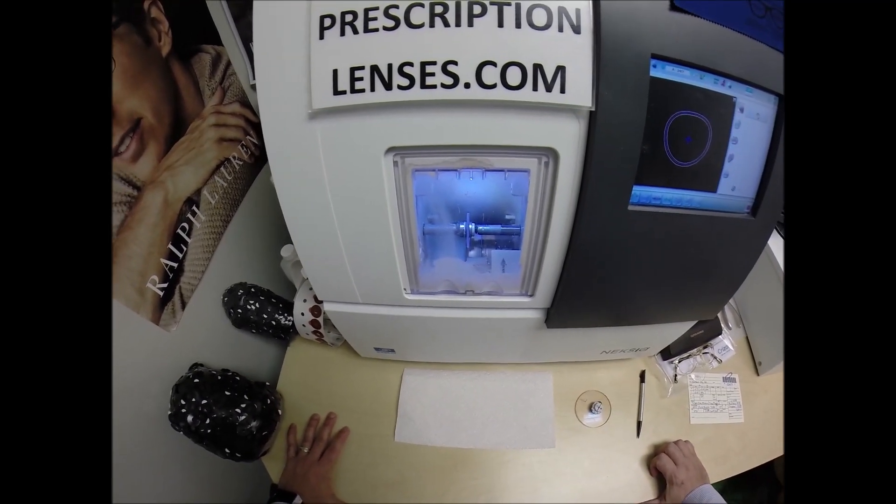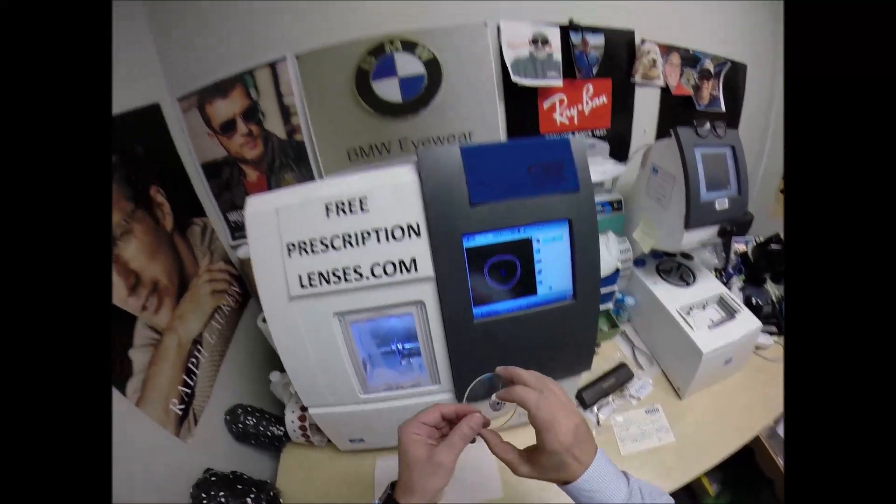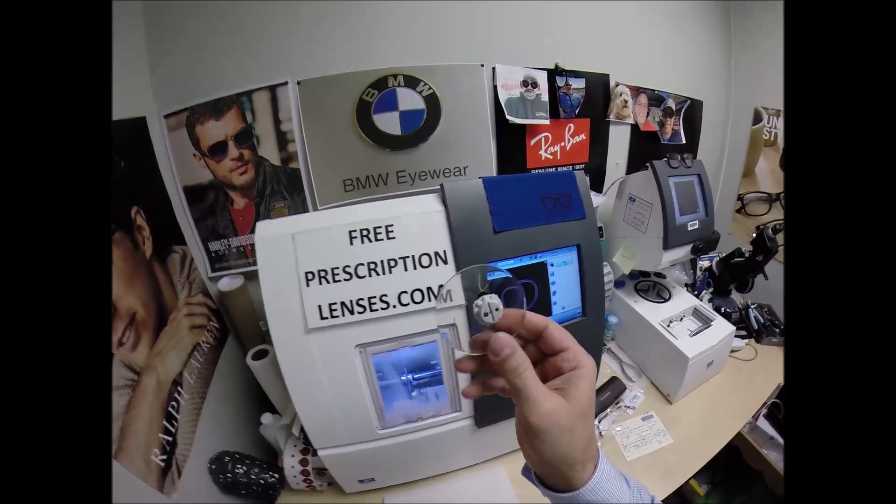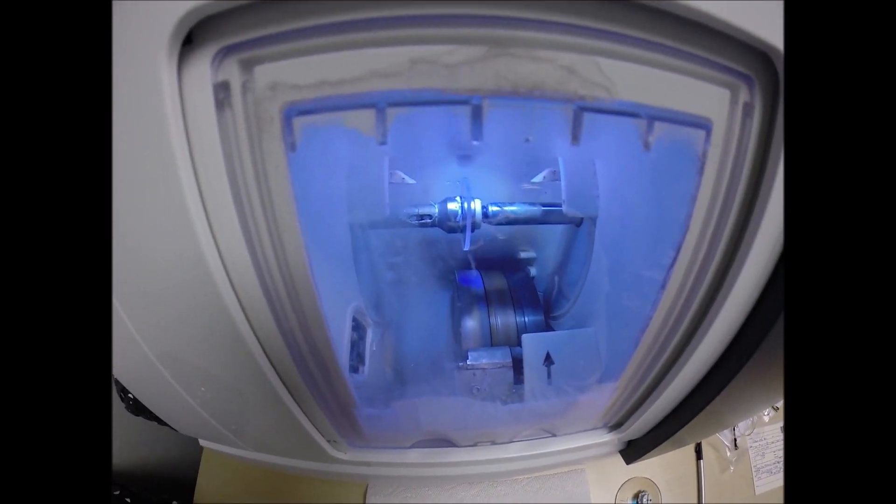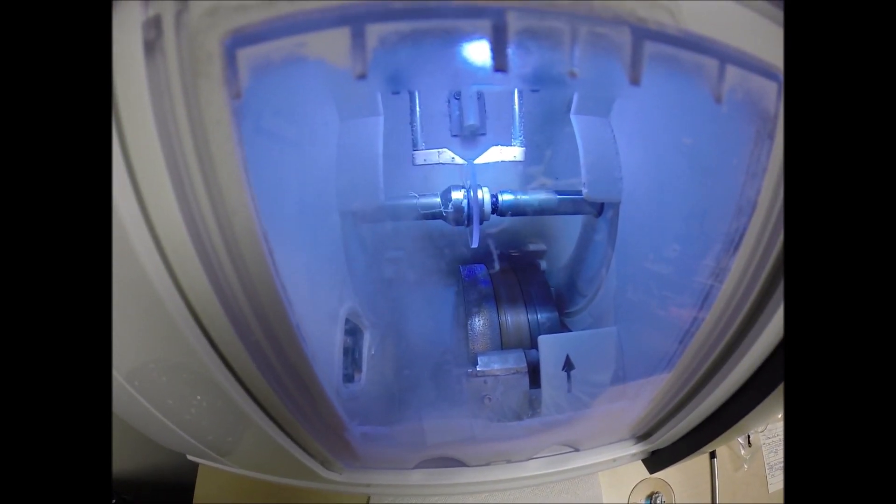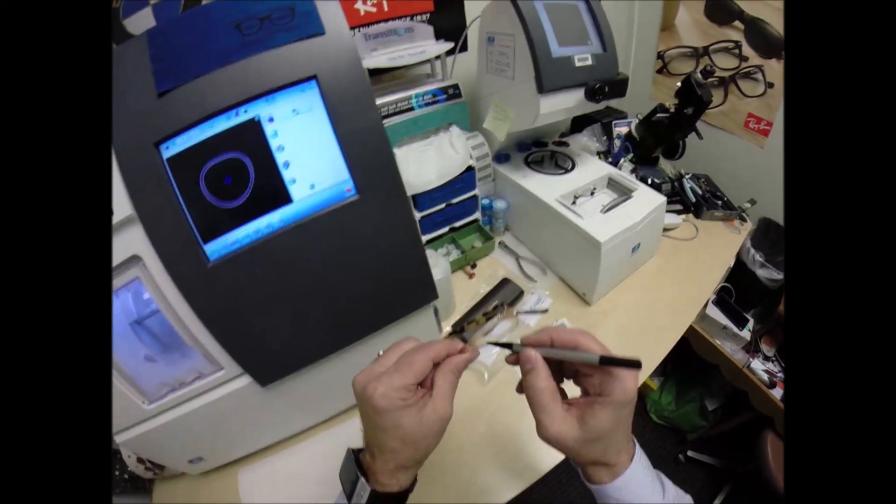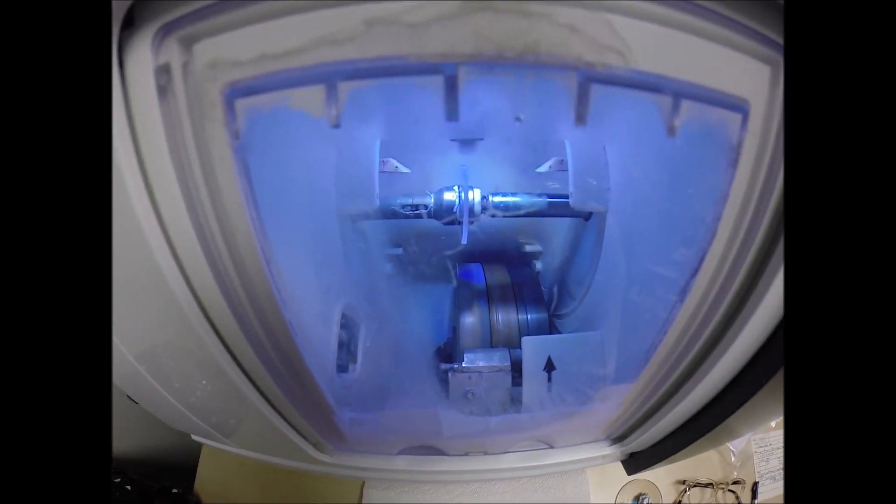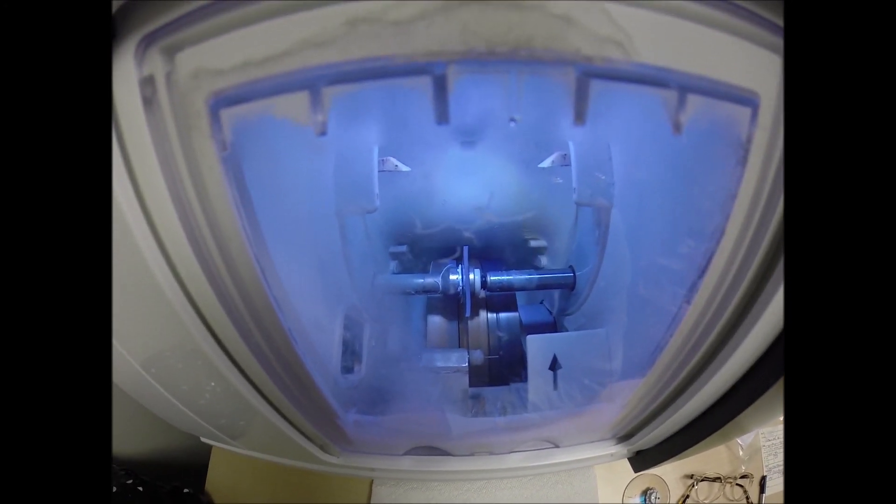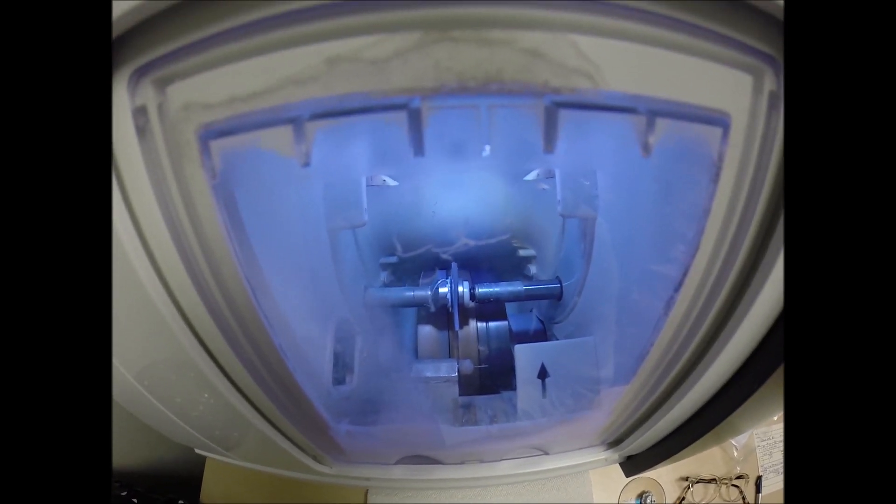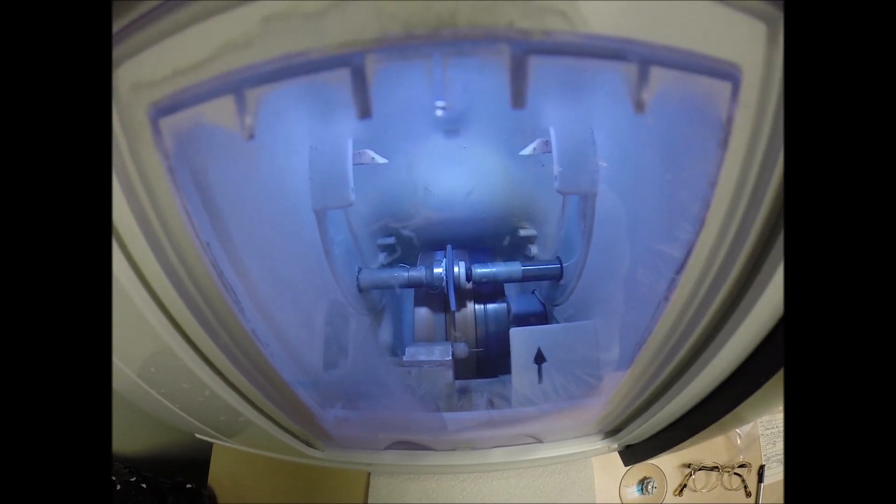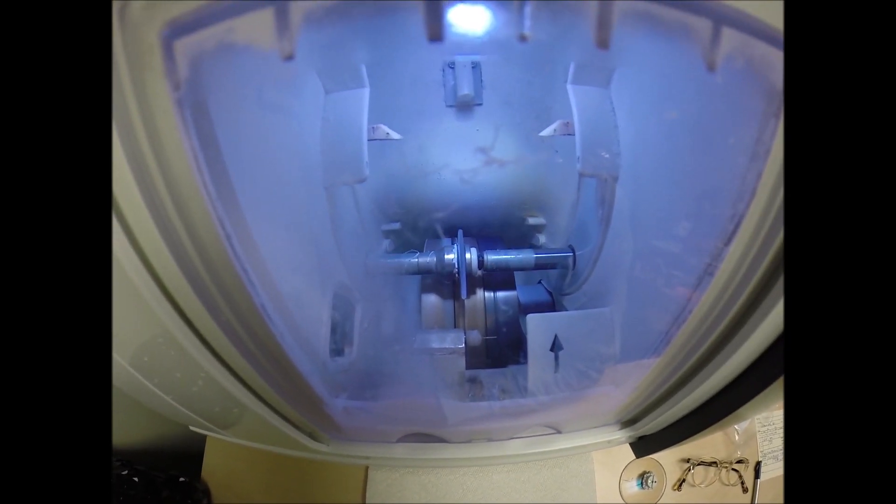The polycarbonate lenses cut dry, meaning that no water sprays onto the lens for the duration of the cutting cycle. Plastic, high-index plastic, Trivex lenses cut wet, meaning that water sprays on them the whole time. But your lenses are made out of polycarbonate. Polycarb is 40% thinner and lighter than regular plastic. They are virtually unbreakable. These are high-impact ballistics-grade lens material, the same lens material that our soldiers wear overseas in combat zones to protect their eyes from shrapnel and flying debris.